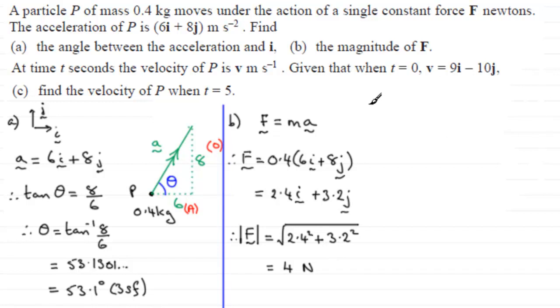Now we move on to the third and final part, part C. So, how are we going to do part C? Well, we're told that at time t seconds, the velocity of P is v meters per second. And we're given that when t equals 0, v equals 9i minus 10j. And we've got to find the velocity of P when t equals 5. So, in order to do this one, what we turn to is the formula which you should be familiar with. That is v equals u plus at. And again, we're dealing with vectors here. v is the final velocity, u is the initial velocity, and a is the acceleration, and t is the time.